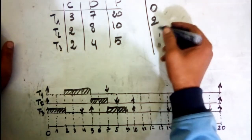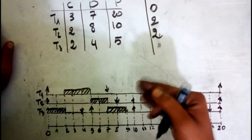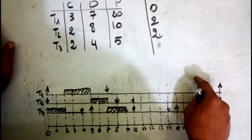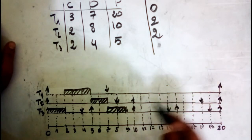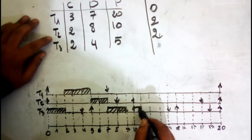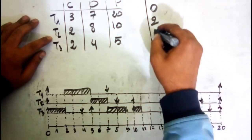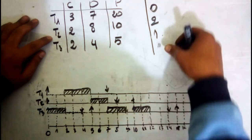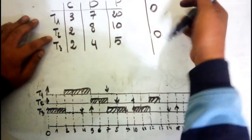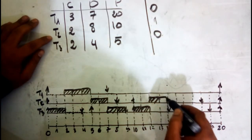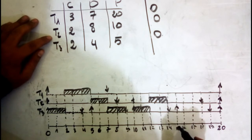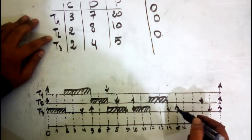At time 10, we have T2 and T3. The closer deadline is T3, so we run T3 and update. We run T3 again and update. Then we run T3 again. After that the processor stays idle briefly until time unit 15, when T3 wakes up again for its new period.